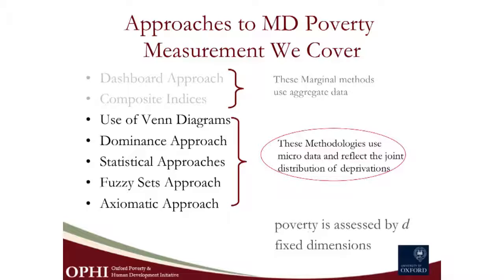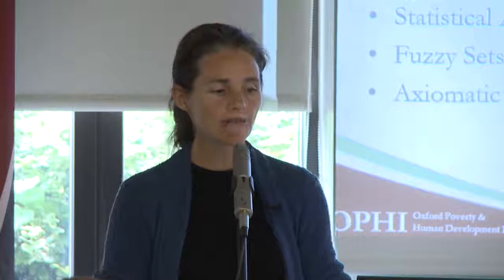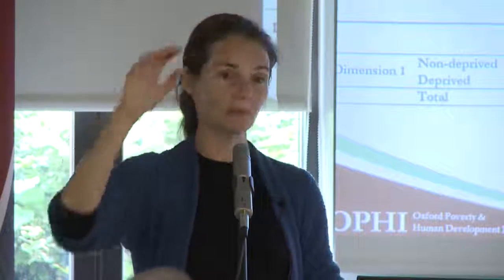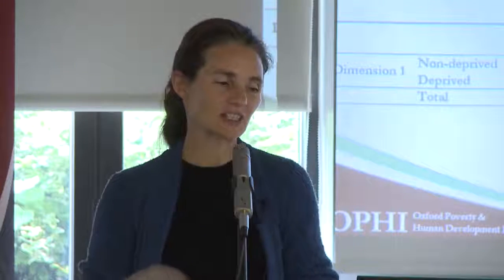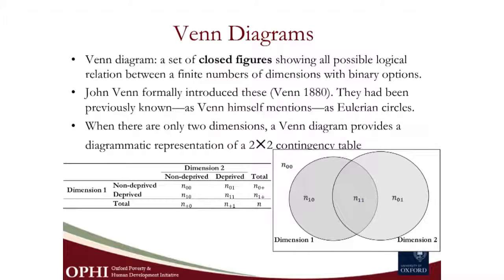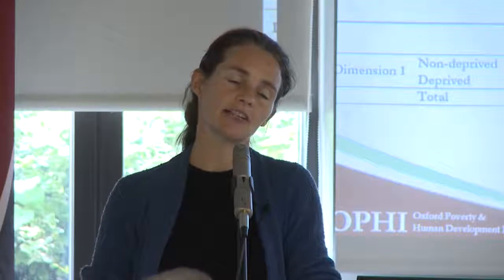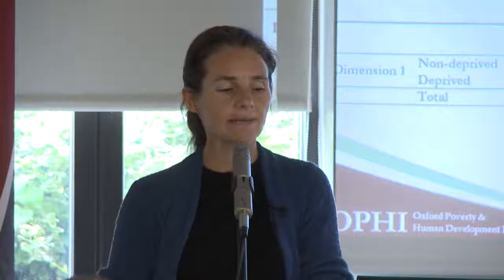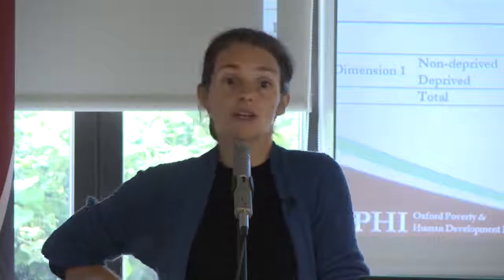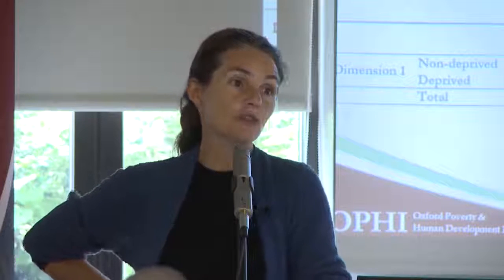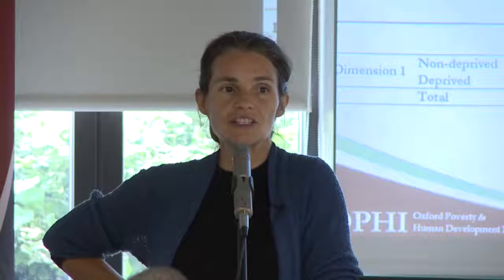Now I would like to focus on five methods that do use microdata and reflect the joint distribution of deprivations. We start with Venn diagrams. Venn diagrams are the circles that you all know — chapati diagrams, pi diagrams, different ways of expressing them. They're a set of closed figures that show all possible logical relations between a finite number of dimensions with binary options: you are in the set or out of the set. The population is exhaustively categorized as being in or out of each set of dimensions. These were introduced formally by John Venn, though he mentioned they were used earlier, called Eulerian circles, and even used before Euler.